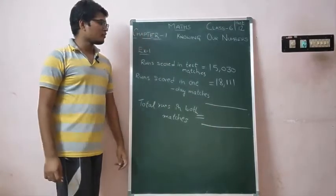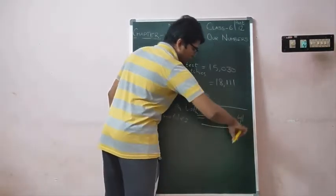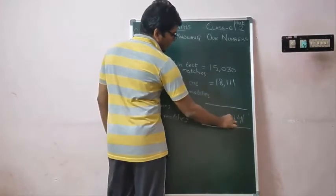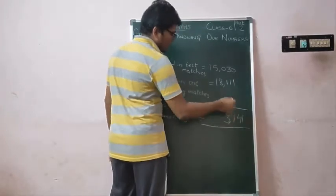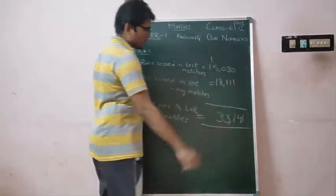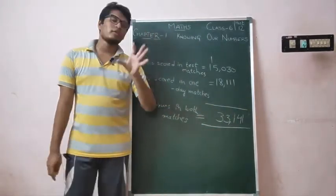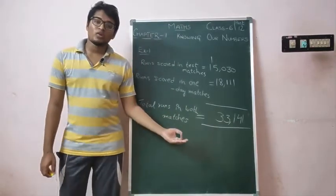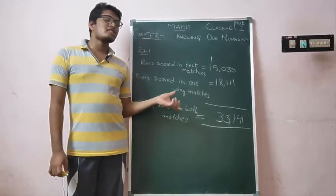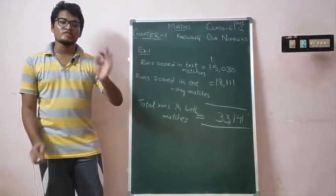So total runs in both matches equals 0 plus 1 is 1, 3 plus 1 is 4, 0 plus 1 is 1, 8 plus 5 is 13. One to carry, 1 plus 1 plus 1 is 3. So the answer is 33,141 runs in both test matches and one day matches. This is your first example.